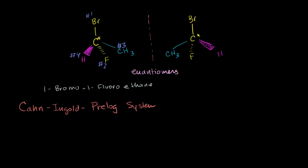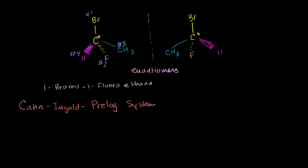So now that we've numbered them, the next step is to orient this molecule so that the smallest atomic number group is sitting into the page — sitting behind the molecule. Right now, this hydrogen is the smallest of all of them. Bromine is the largest, hydrogen is the smallest. So we want to orient it behind the molecule. The way it's drawn right now, it's oriented in front of the molecule. So to orient it behind the molecule — and this really is the hardest part — is just to visualize it properly.